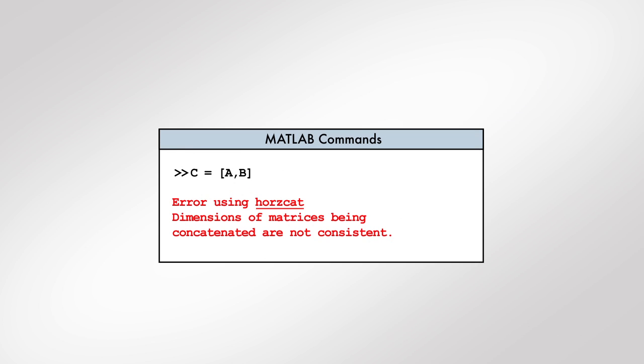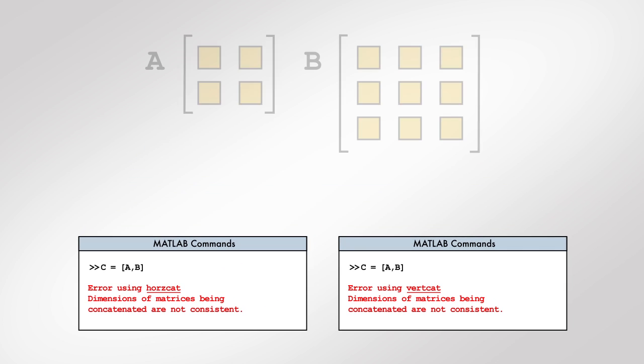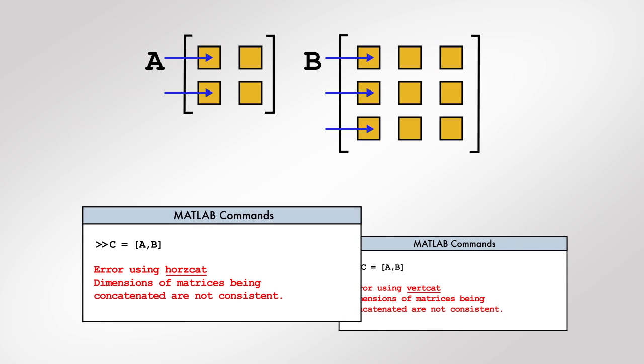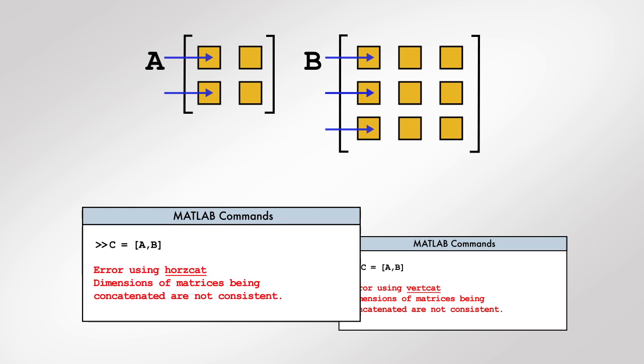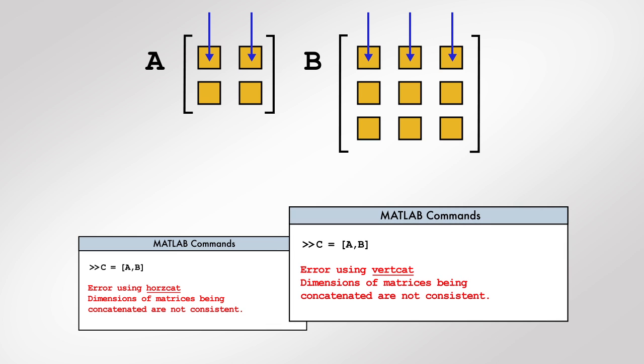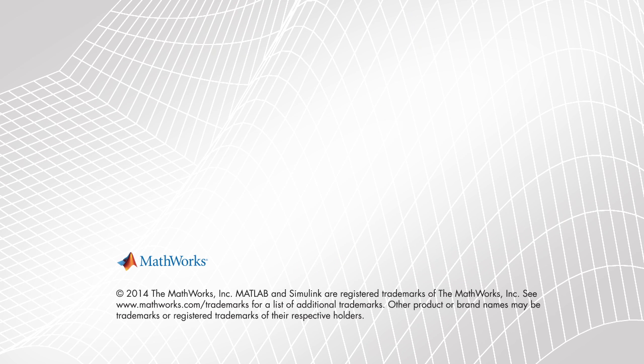If MATLAB returns an error indicating inconsistent dimensions while attempting concatenation of two or more arrays, check if the arrays have the same number of rows when concatenating horizontally, and the same number of columns when concatenating vertically. Thank you.